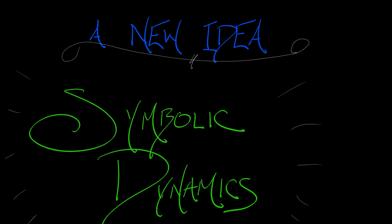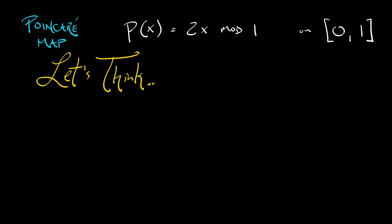This is incredibly powerful and central to our story. Here's the setup: we've got our Poincaré return map p(x) = 2x mod 1 on the interval from 0 to 1. Now we could try analyzing that as it is, but here's a different way.